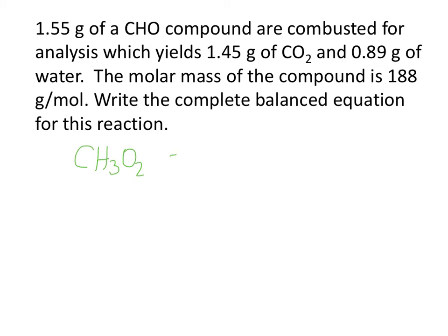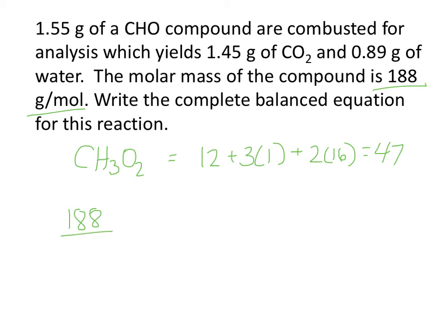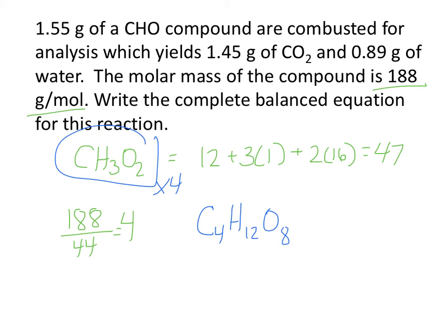The molar mass of the empirical formula CH3O2 is 12 plus 3 times 1 plus 2 times 16, which is a total of 47. But the molar mass of the entire compound is 188 grams per mole. Dividing 188 by 47 gives 4, which means we multiply the whole empirical formula by 4 to get the molecular formula. So C becomes C4, H3 becomes H12, and O2 becomes O8 — giving us a molecular formula of C4H12O8.